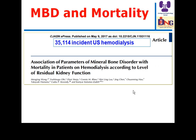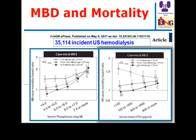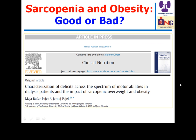When interpreting mineral bone disorder profiles like serum phosphorus and PTH, we should consider residual kidney function. If serum phosphorus is within range and there is residual kidney function, mortality is reduced. However, if residual kidney function is very low (0.5 mL/min), mortality increases, particularly when serum phosphorus exceeds 7 mg/dL. The same applies to PTH: if PTH is very low and residual kidney function is very low (0.5 mL/min), the hazard of mortality increases.